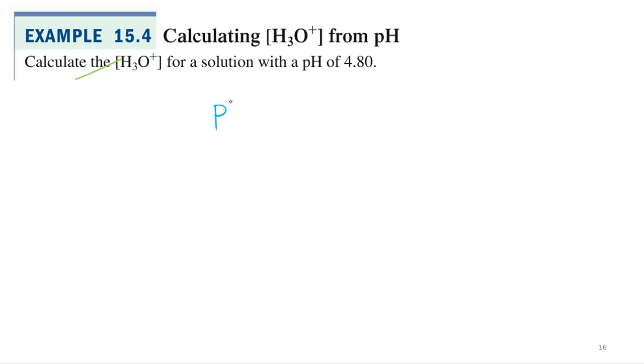And all we have to do is just a little bit of math to figure that out. So here's our equation: pH equals negative log of the hydronium. And for this example, we want to calculate the hydronium concentration for a solution that has a pH of 4.80. So we know the pH. What we want to do is solve for the hydronium.